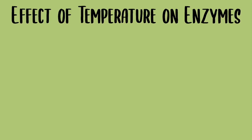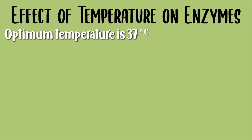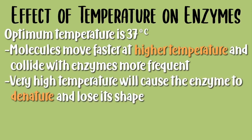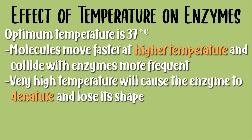Now we're going to look at how temperature affects enzymes. Most enzymes work best at 37 degrees Celsius. This is because molecules move faster at higher temperatures and collide with enzymes more frequently. However, when the temperature is too high, it will cause the enzyme to denature and lose its shape. At lower temperatures, there is not enough kinetic energy, so the reaction will be much slower.